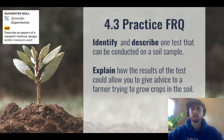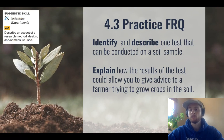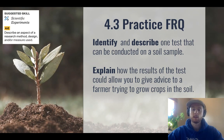Our practice FRQ today for topic 4.3 is to describe an aspect of a research method or experiment. Try to identify and describe one test that can be conducted on a soil sample, and then explain how the results of that test could allow you to give advice to a farmer who's trying to grow crops in that soil.